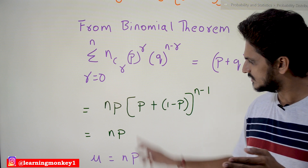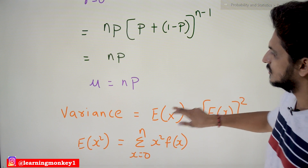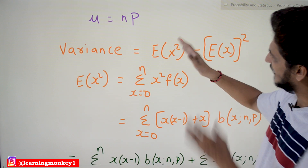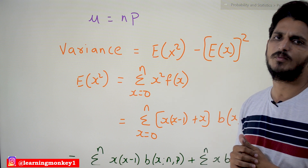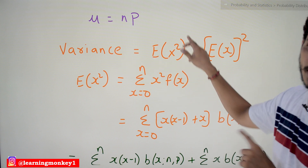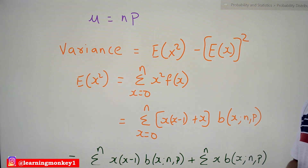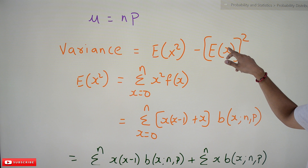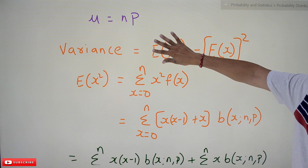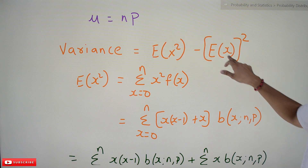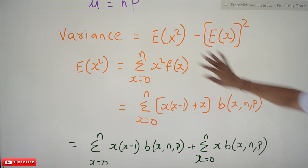So the expected value — the mean of the binomial distribution — is μ = np. Now we have to find the variance. Variance is given as E[X²] − (E[X])² = E[X²] − (np)². We first identify E[X²], which is Σ (x=0 to n) x² · f(x).